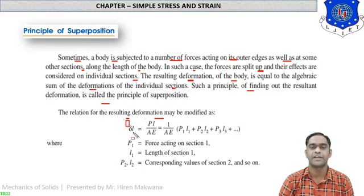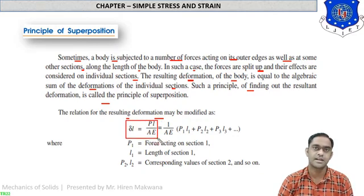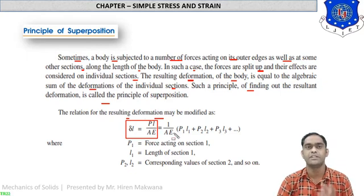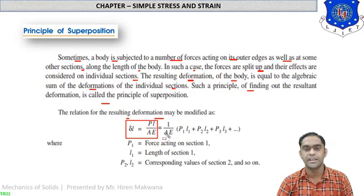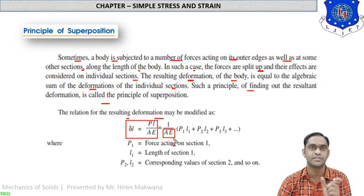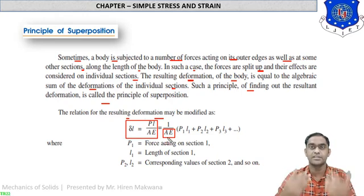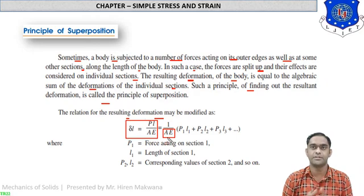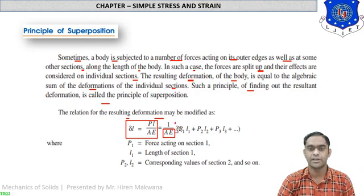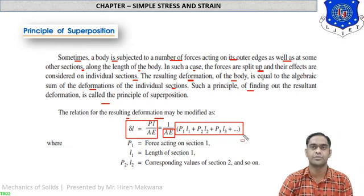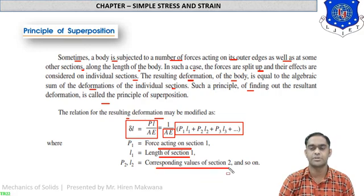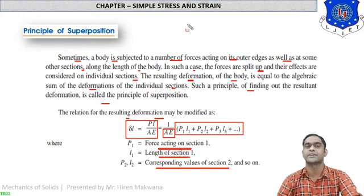The relation for the resulting deformation may be written as: delta L = PL / AE. This is the standard formula. When applied to multiple parts, A and E remain constant — A is the cross-sectional area, which is constant because we consider one continuous cross-section bar divided into parts. So 1/AE is taken as common, giving: delta L = (1/AE) × (P1·L1 + P2·L2 + P3·L3 + ...), where P1 and L1 are the force and length of section 1, and so on.